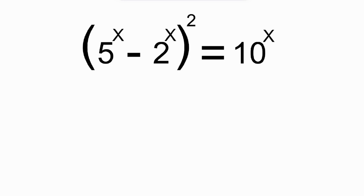Hello and welcome again to the channel. We have on the board a math question: 5 raised to the power x minus 2 raised to the power x, all in a bracket raised to the power 2, is equal to 10 raised to the power x. We're asked to solve for the value of x.